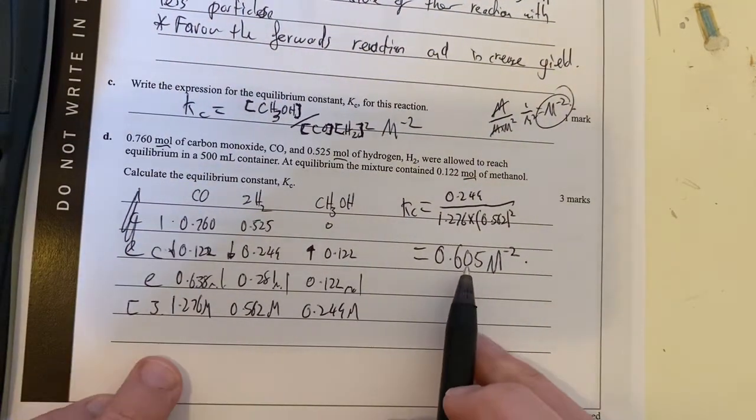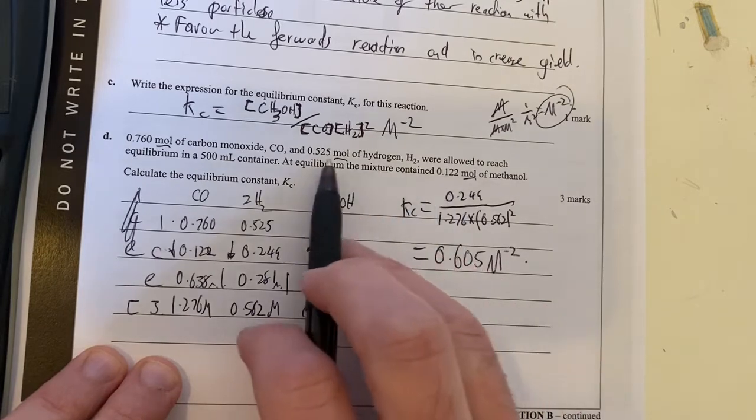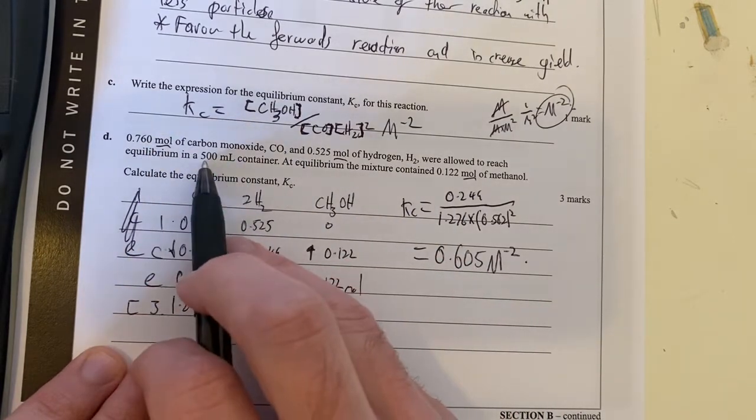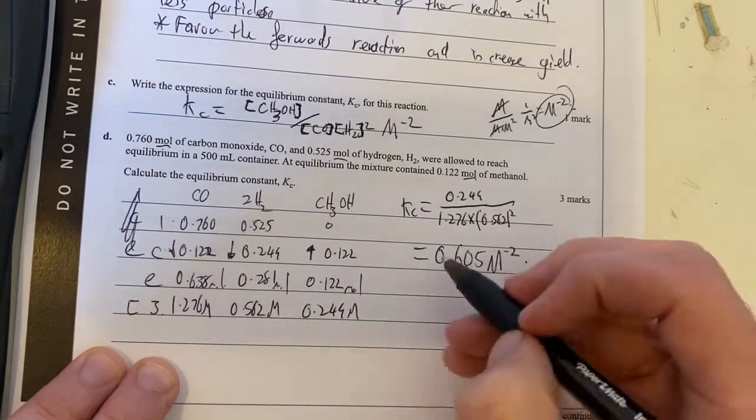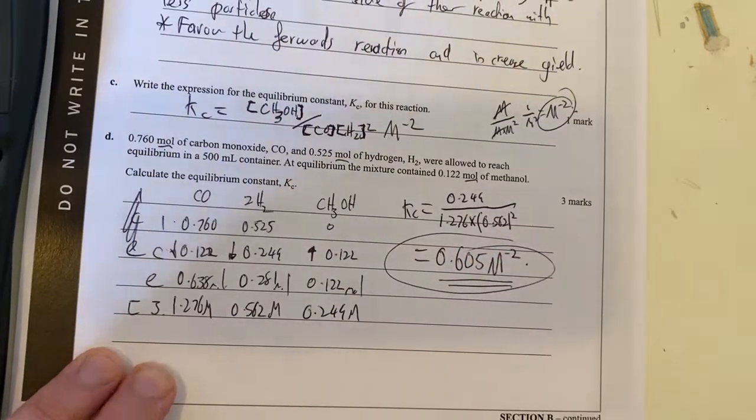I'm just going to check my significant figures there. I've got three significant figures here, three here, three here. It's a 500 ml container, so I'm guessing that's three as well. So therefore, I should be rounding to three significant figures. That should be my answer there.